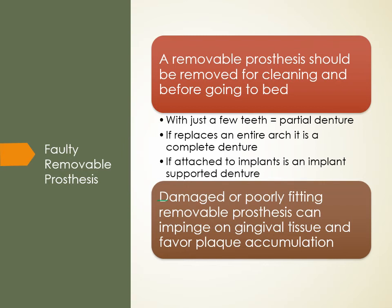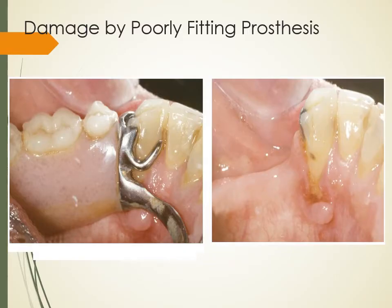A damaged or poorly fitting removable prosthesis can impinge on gingival tissue and favor plaque accumulation. The clasp area where the partial attaches to existing teeth can damage those sites. Clinically, this appears as tissue being worn away around the clasp, creating a nodule where the clasp hasn't accounted for the tissue beneath it.